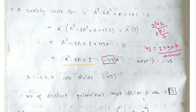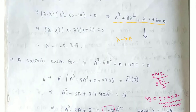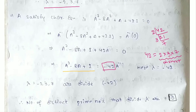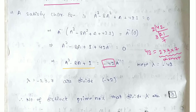The number of distinct primes that divide λ (which is 42) are 3 — namely 2, 3, and 7. So the answer is 3.